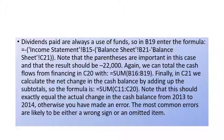Finally, in cell C21, we calculate the net change in the cash balance by adding up the subtotals using the formula: =C11+C14+C20. Notice that this should exactly equal the actual change in the cash balance from 2015 to 2016. Otherwise, you have made an error. The most common errors are likely to be either a wrong sign or an omitted item — take care of these errors, my students.